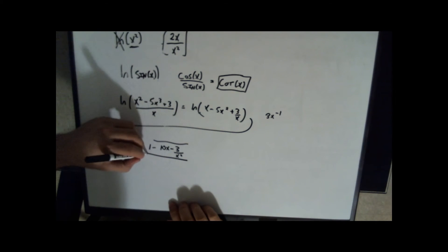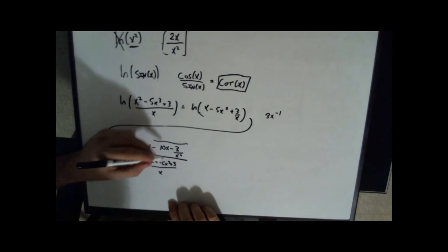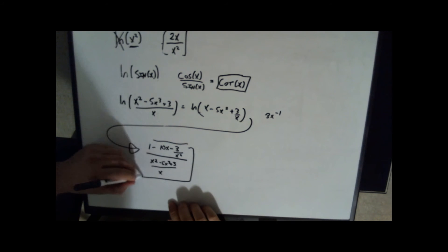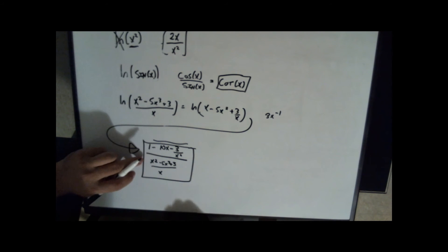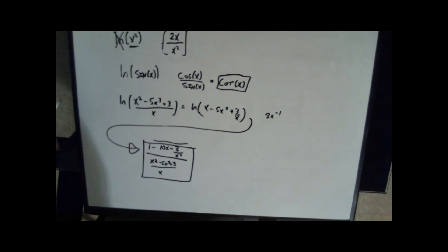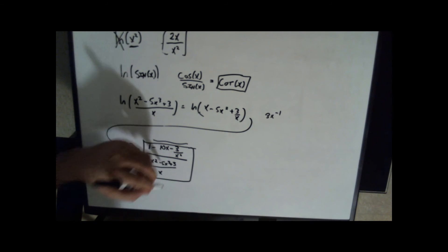And then divide that by x minus 5x squared plus 3 over x. We have a complex fraction or a compound fraction there that we'll have to simplify. But that's the idea. You just write the derivative divided by original.